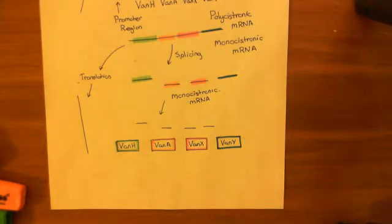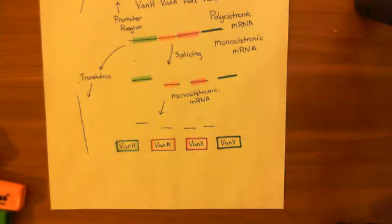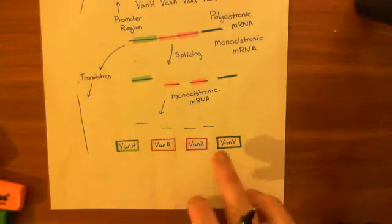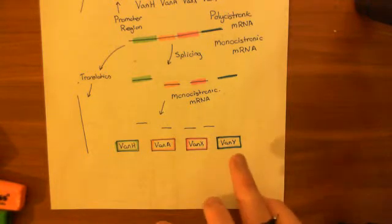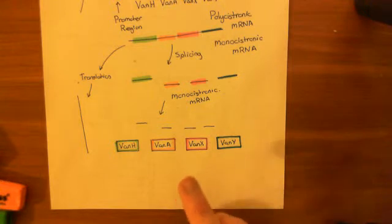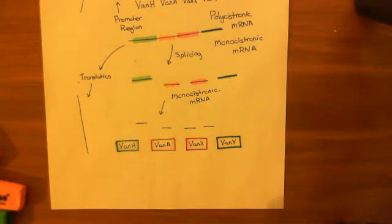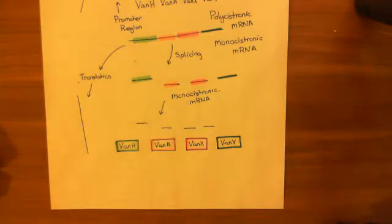Welcome to this next video on vancomycin resistance in Enterococcus faecalis. What we want to now see is how the expression of these four proteins — VAN-H, VAN-A, VAN-X, and VAN-Y — is going to actually help the bacterium Enterococcus faecalis resist the effects of vancomycin.